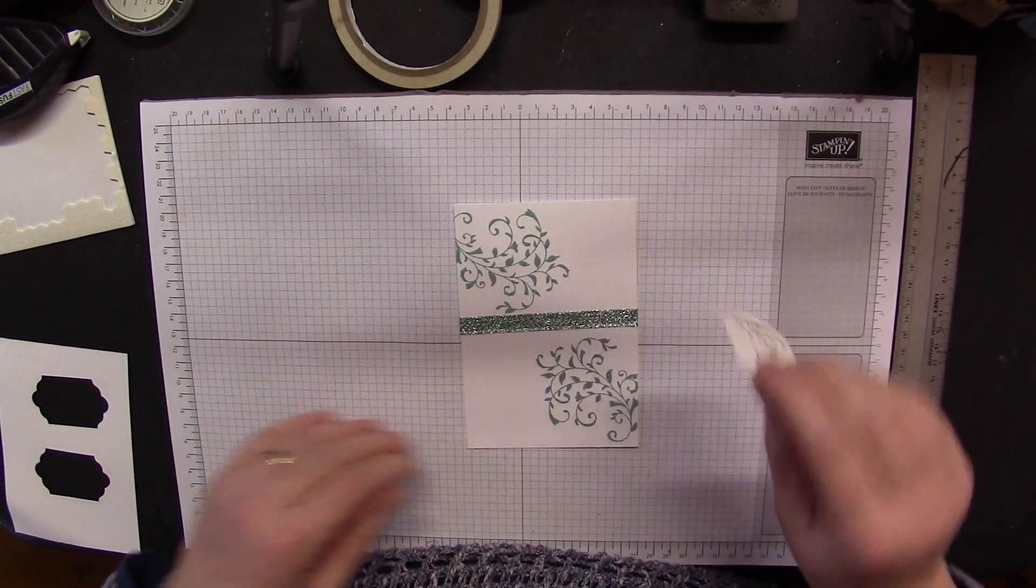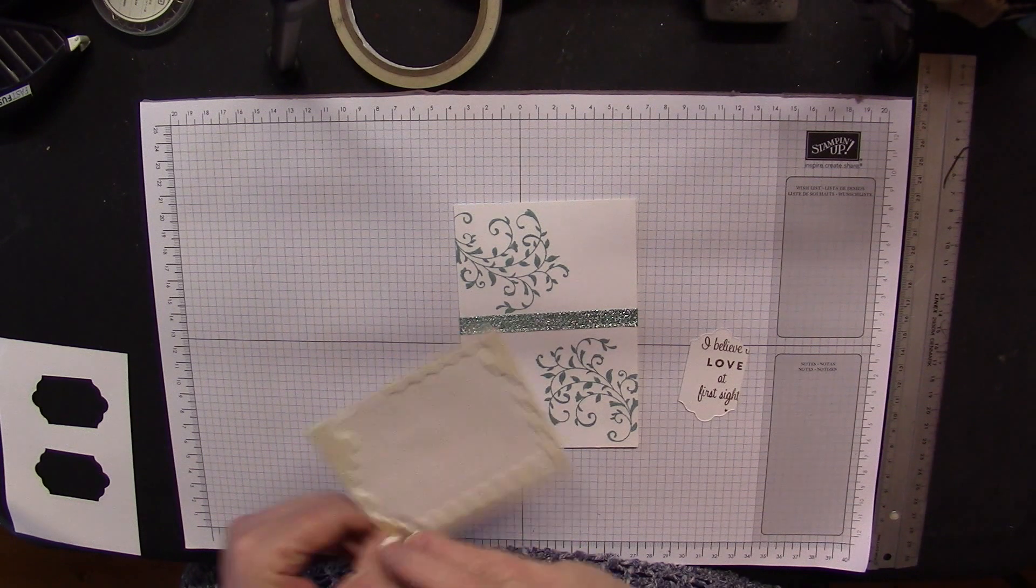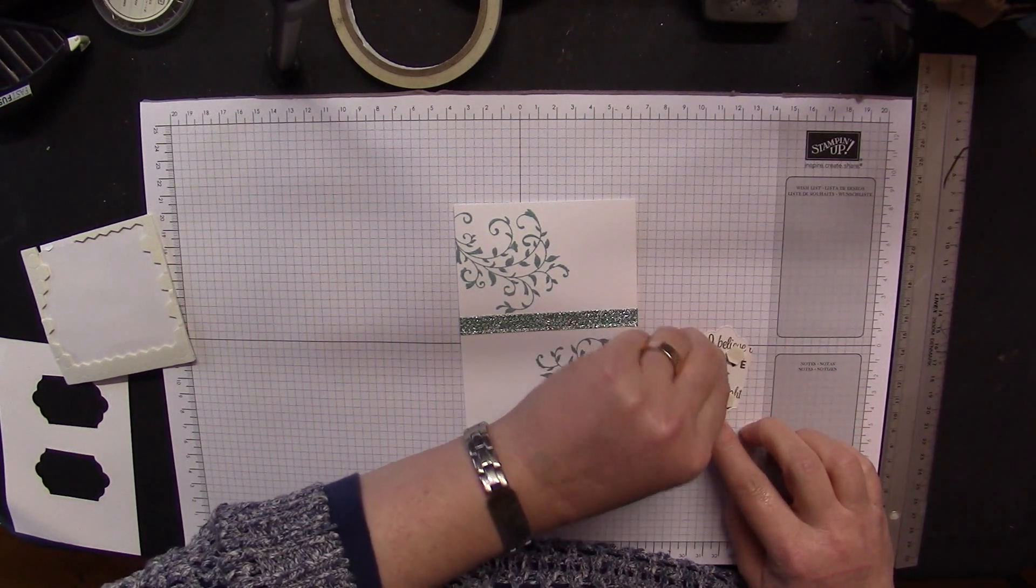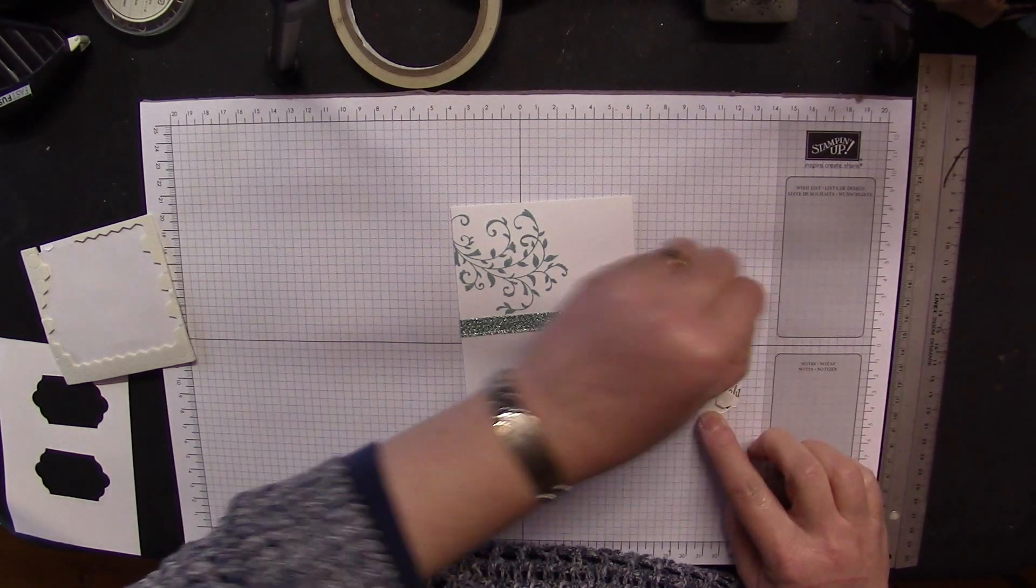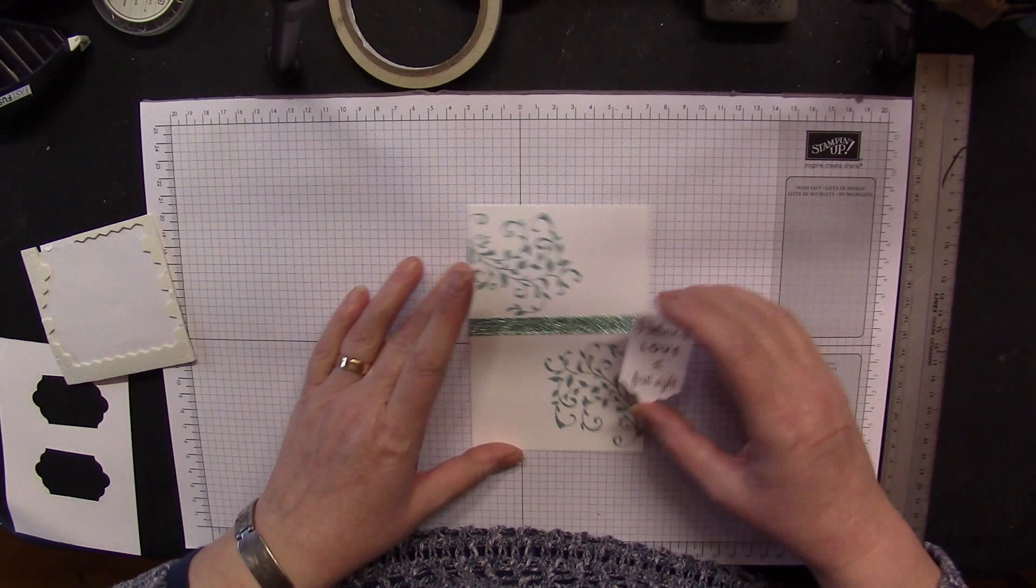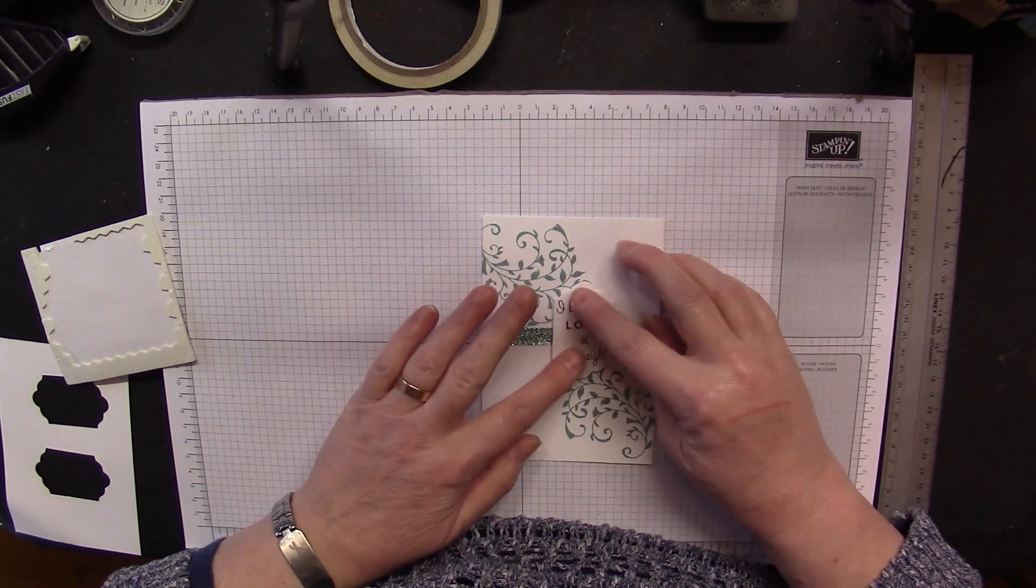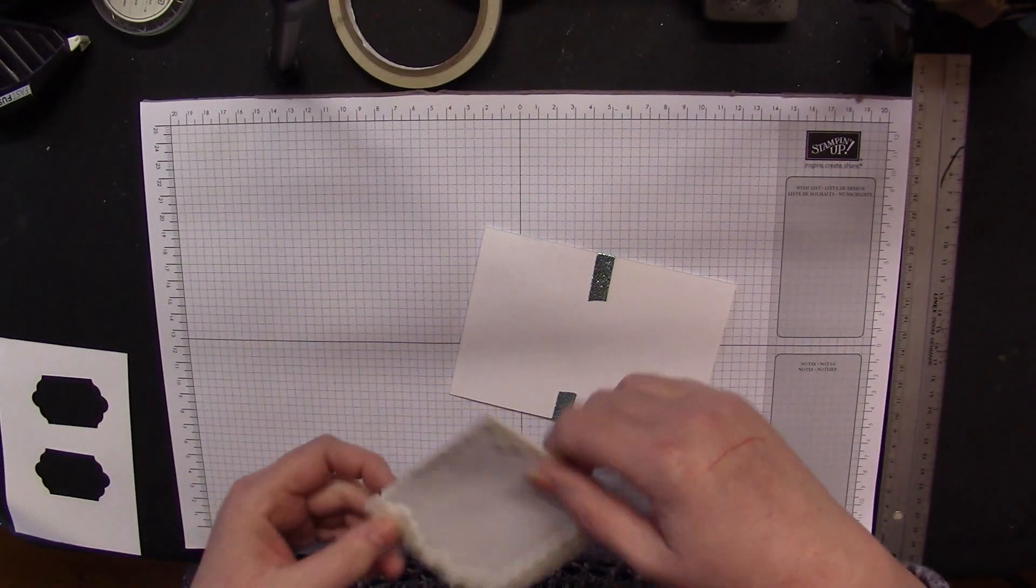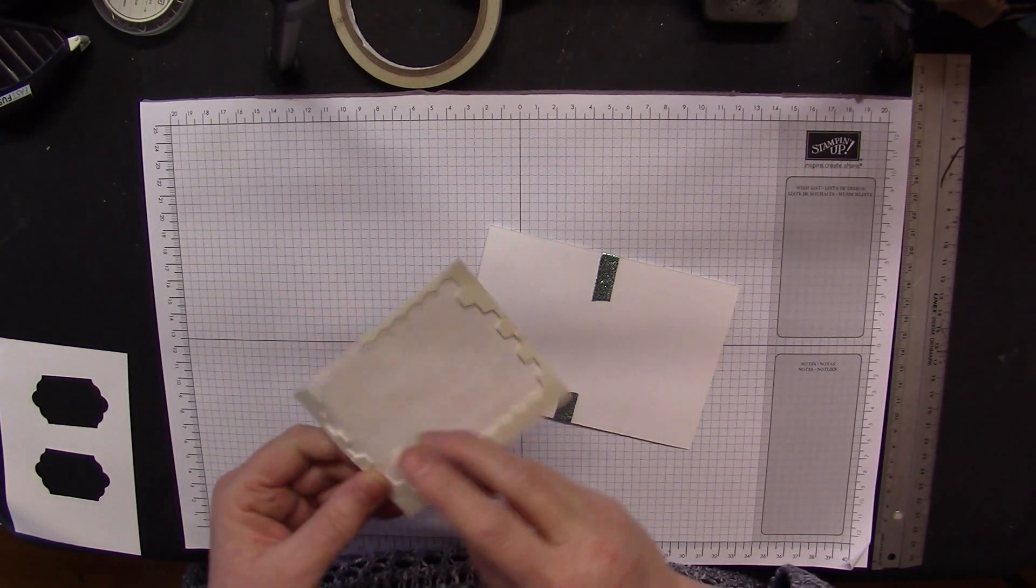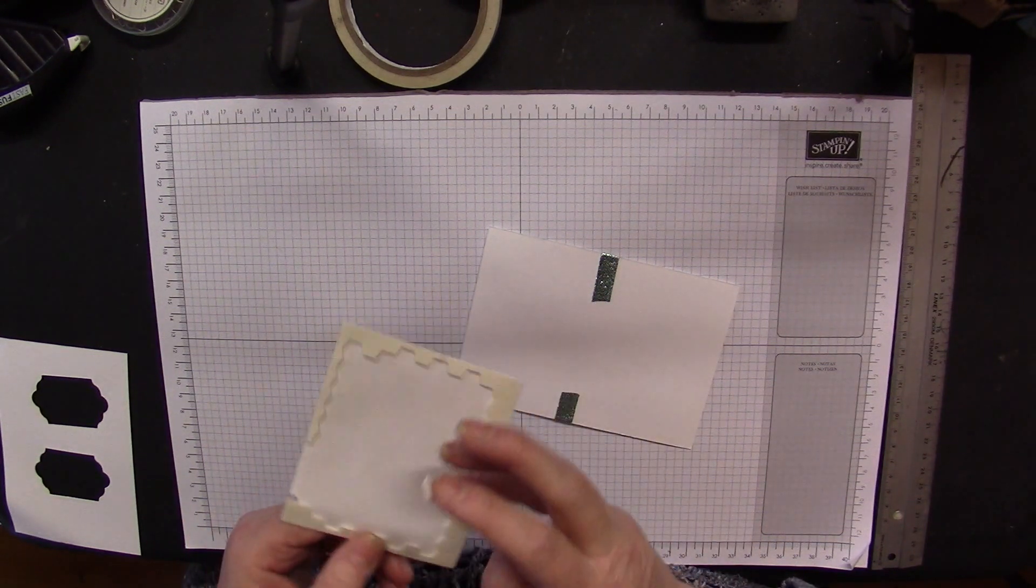Then you want your sentiment on, so I've used Stampin' Dimensionals for this. One in each corner. Take the backing off. I just think it gives some added lift on a card. One, two, three, four.